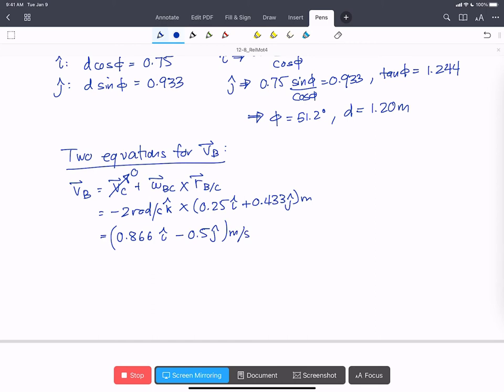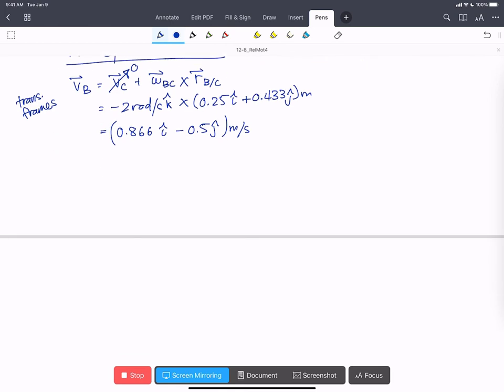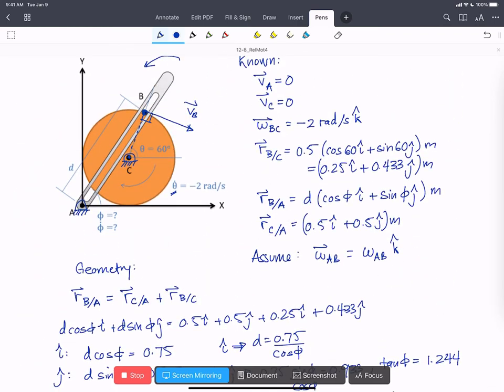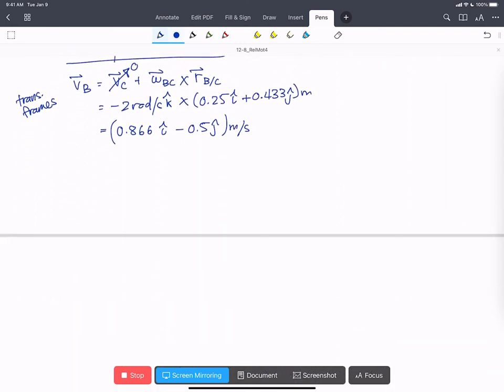So now we have an expression of VB and this is translating frames. That's our translating frames equation. Now we're going to do a second expression for VB. This time coming from A to B. And because that pin B is sliding along AB, sliding along the rocker, we have to use a rotating frames equation.